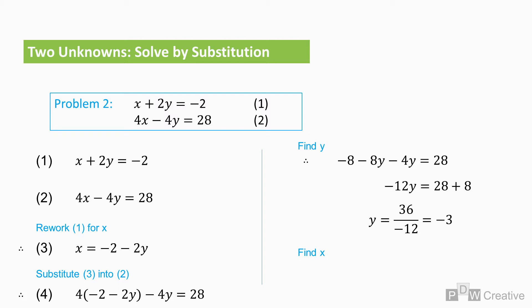We can now use equation one, two, or three to find x as we now know y. So x equals minus two minus two times minus three, and x equals four.